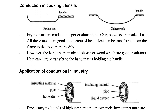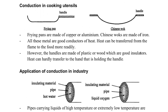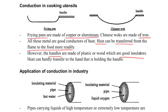When we design cooking utensils, the frying pan is usually made up of metal — copper, aluminium, or even iron. However, when we make the handle, we choose to use a poor conductor so that heat will not transfer to our hands and burn us.